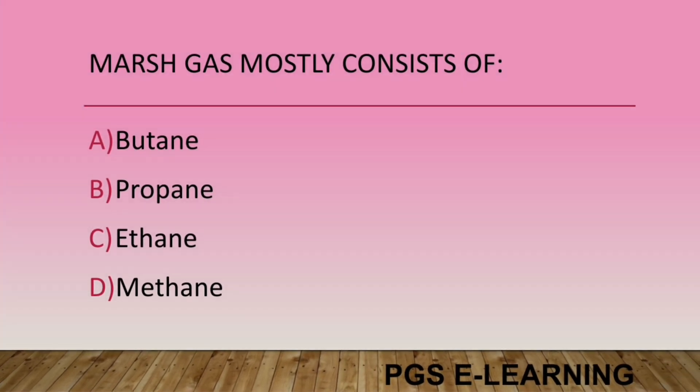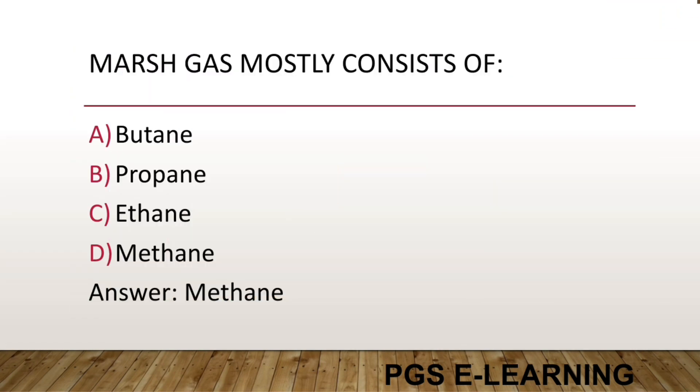LPG (liquefied petroleum gas) mostly consists of: Option A, butane. Option B, propane. Option C, ethane. Option D, methane. Correct answer is methane.